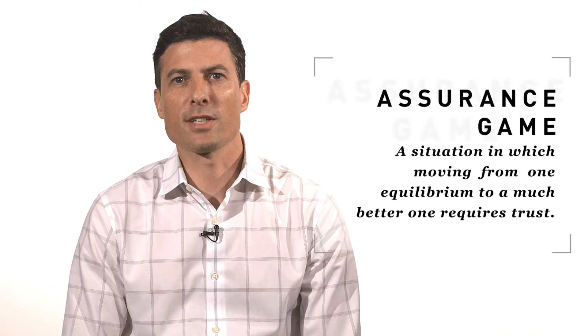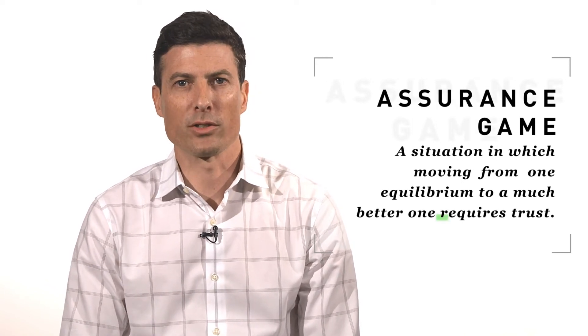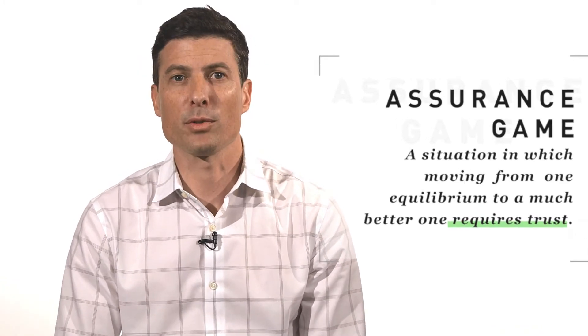A common model in game theory is called an assurance game. The assurance game captures situations in which moving from one equilibrium to a much better one requires trust, and trust often depends on information that isn't available.